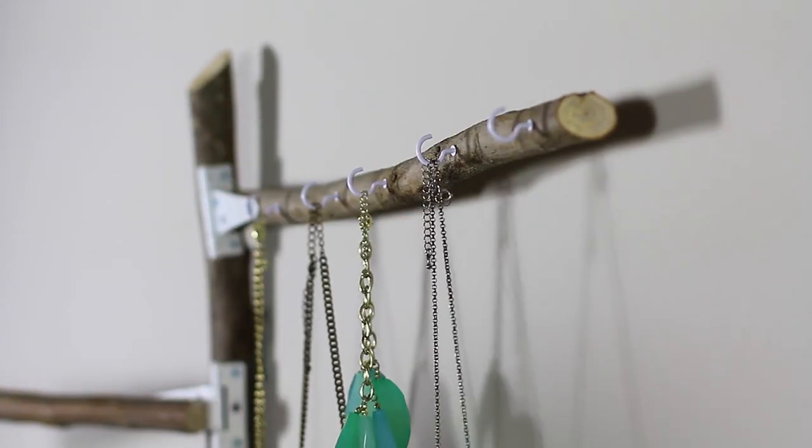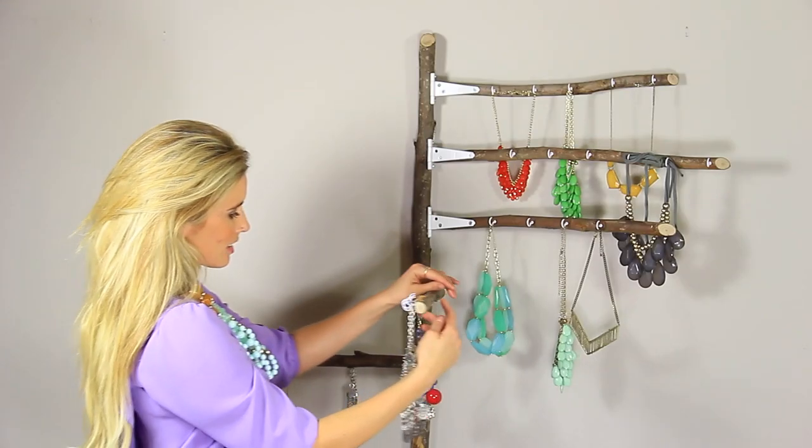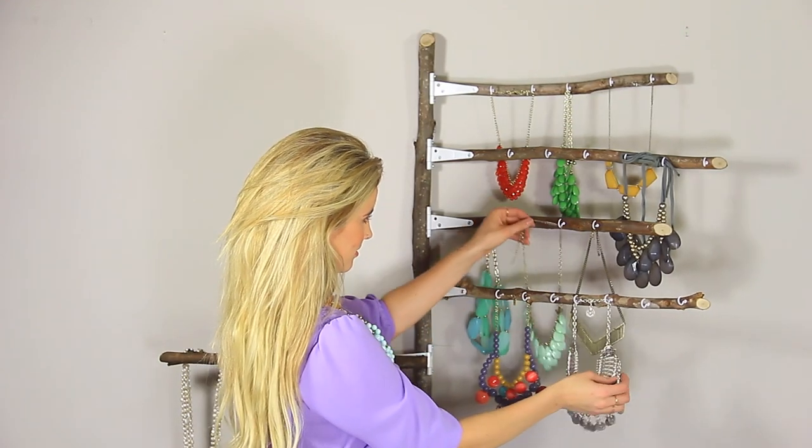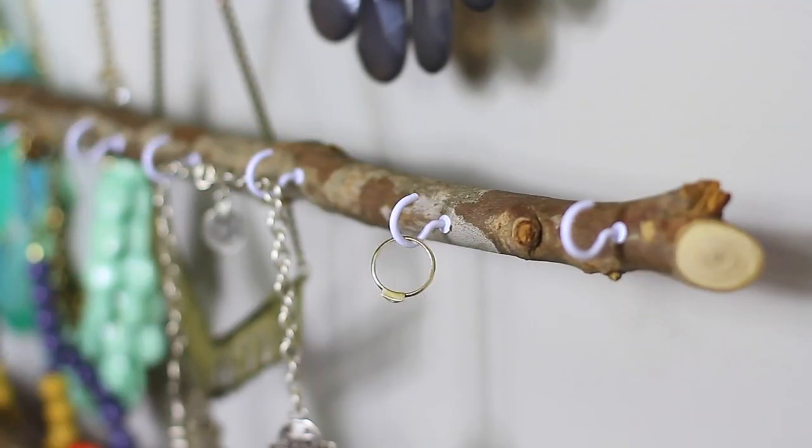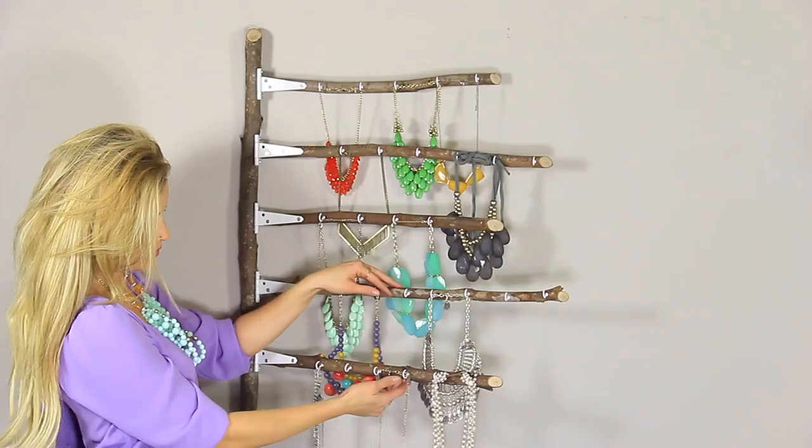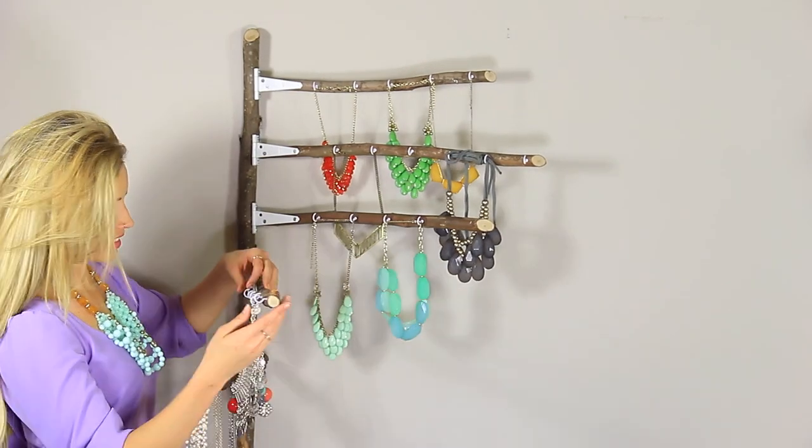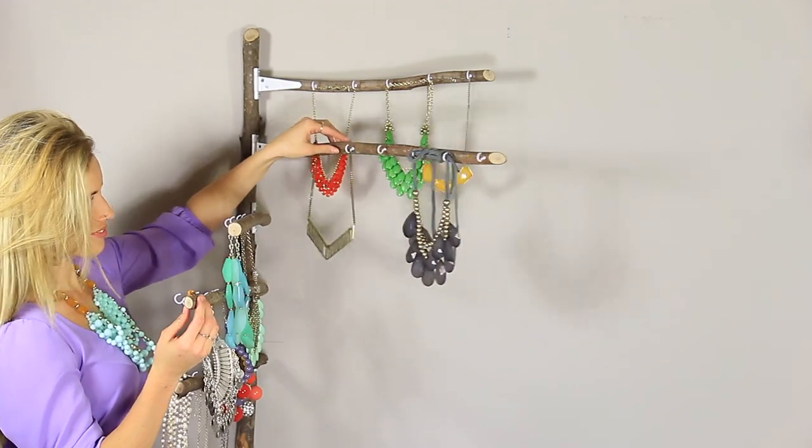Now the fun part. Add your necklaces on however you'd like. You can color coordinate them. You can hang the shorter ones on the top, the longer ones on the bottom. I even added a few rings to the side of mine. This should be a really awesome organizational aid for you guys. And I'm really excited for you guys all to try it.